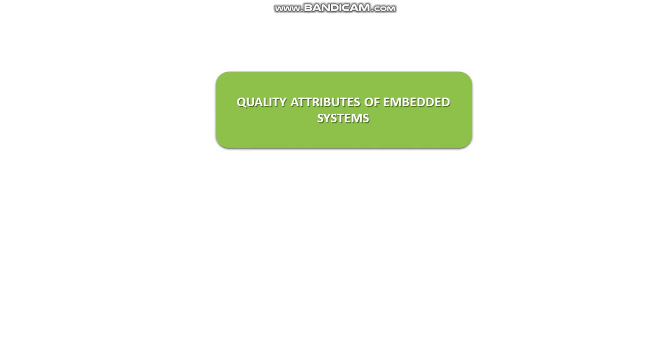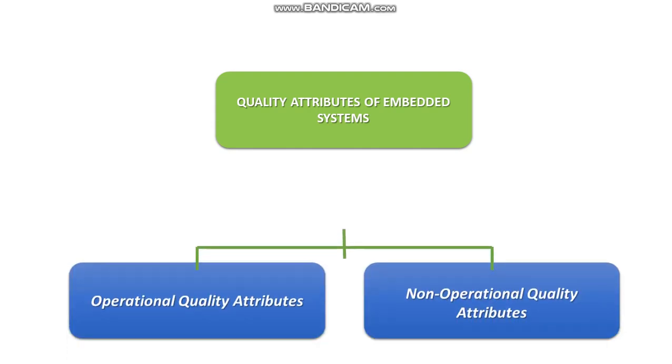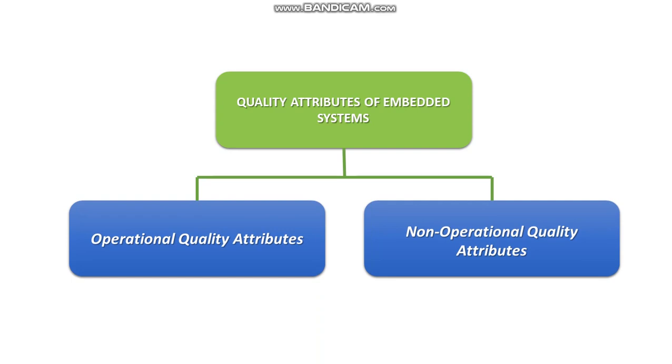These are the attributes that together form the deciding factor about the quality of an embedded system. There are two types of quality attributes. The first one is operational quality attributes. The second one is non-operational quality attributes.